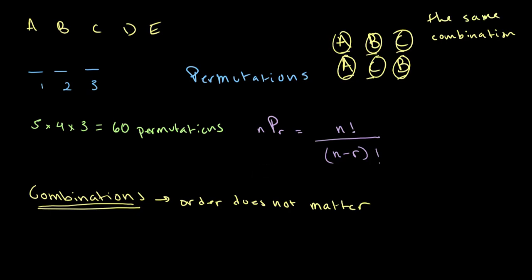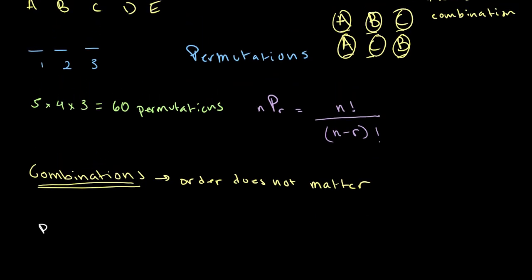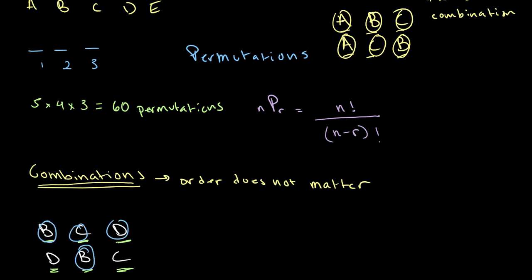We could also take another example: two separate permutations where we have people B, C, and D sitting, or people D, B, and C sitting. The only difference is which chair each person is in. In the first case, B is in chair one, C is in chair two, and D is in chair three. In the second case, D is in chair one, B is in chair two, and C is in chair three. While these are different permutations, they are the same combination, because in both cases people B, C, and D are all sitting. Order does not matter when we're dealing with combinations.